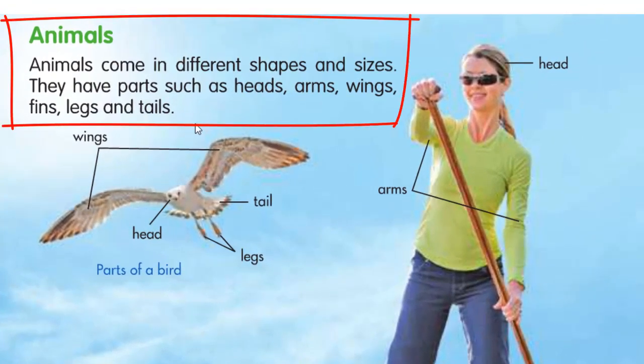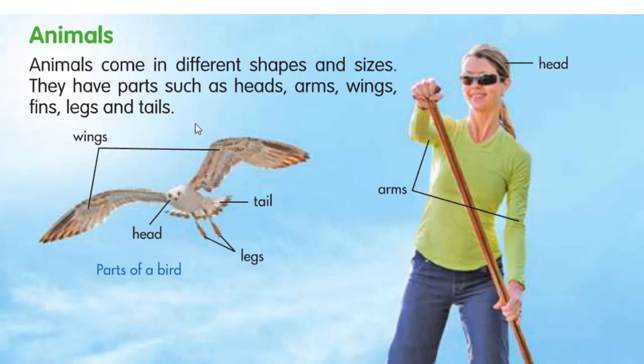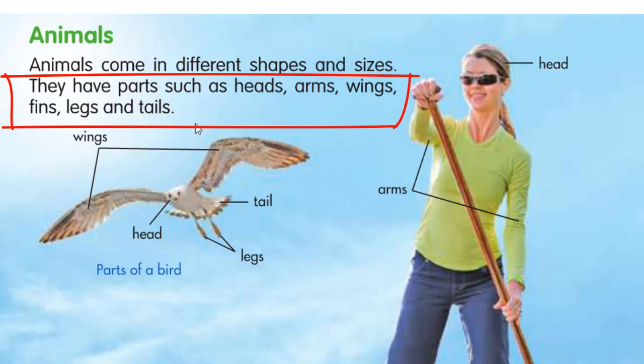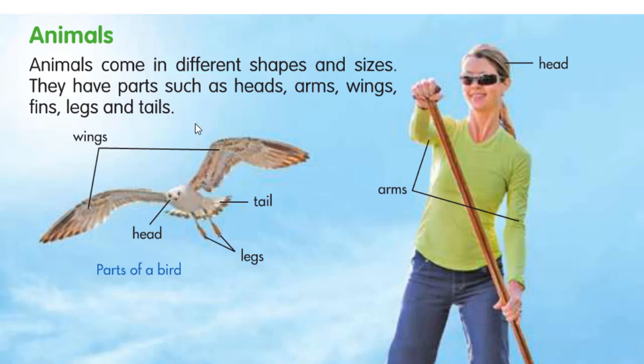Animals come in different shapes and sizes. They have parts such as heads, arms, wings, fins, legs, and tails. Jadi animals itu memiliki perbedaan bentuk dan ukurannya sendiri. For example, contohnya di sini adalah burung — burung dengan manusia itu kan berbeda bentuknya dan berbeda juga ukurannya. Di bawahnya, they have parts such as heads, arms, wings, fins, legs, and tails. Jadi mereka ini sebagian memiliki kepala, ada yang memiliki lengan, ada yang memiliki sayap, fins — sirip, legs — kaki, and tails — ekor.